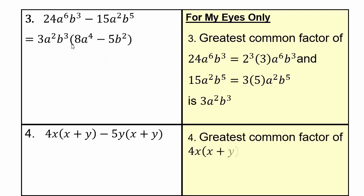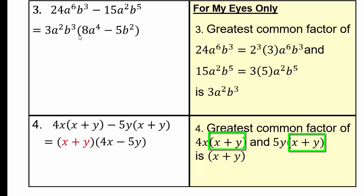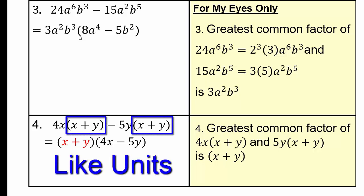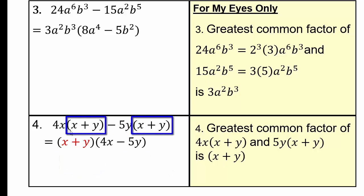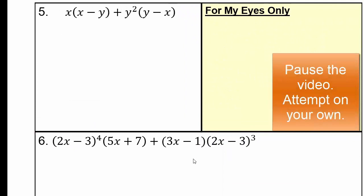The greatest common factor of 4x times x plus y and negative 5y times x plus y is going to be x plus y. So this becomes x plus y times 4x minus 5y. You also saw problems like this when we were adding and subtracting like units — in this case the unit is x plus y, so it will be 4x minus 5y copies of x plus y.